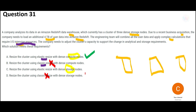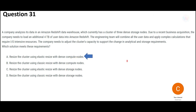Option A is correct — use Elastic Resize with dense compute nodes. Option C using dense storage nodes is wrong, because storage nodes will not help with compute-intensive operations. You already have three dense storage nodes which is sufficient for storage. You need strong compute power to apply complex calculations, so Option A is the final answer.